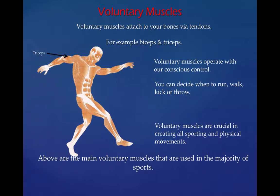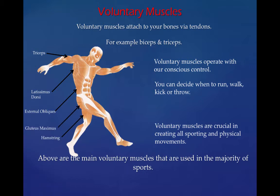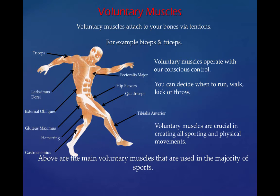These are the ones you should know for the majority of sports: your tricep, your latissimus dorsi, your external obliques — your lats and your external obliques are located in your back and to the side of your body — your gluteus maximus, your hamstring, and your gastrocnemius. Your tibialis anterior at the front of your shinbone. Your quadriceps, your hip flexors just below your abdominals. Your pectoralis major where your pecs are. Your bicep and your deltoid. Males and females all have the exact same muscles.